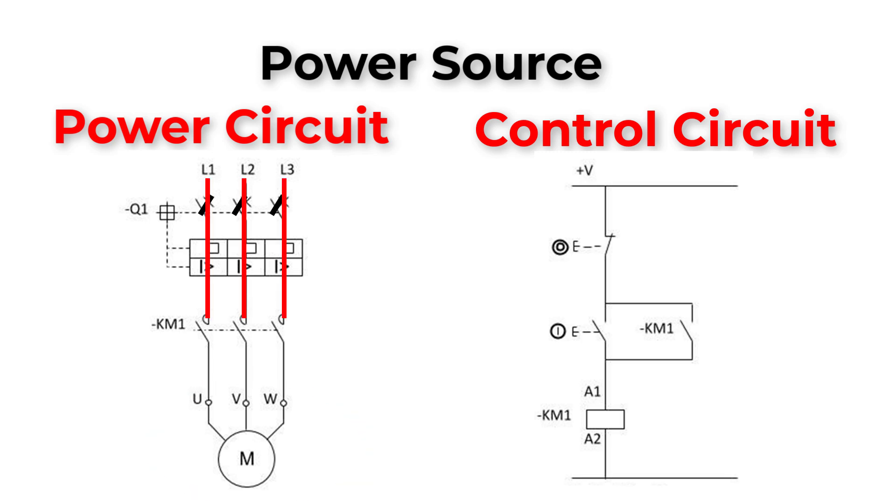In this example, control circuit is used to turn on and off the motor by controlling the contactor to turn on and off. So control circuit here is the brain that gives an order to the contactor, which is the muscles, to deliver power to the motor.